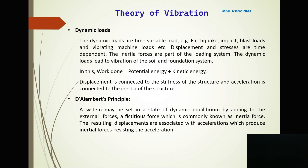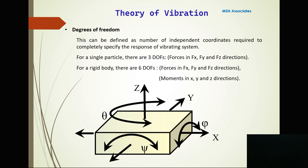The resulting displacements are associated with accelerations which produce inertial forces resisting the acceleration. We must also have the concept of degrees of freedom. For a single particle there are three degrees of freedom; for a rigid body there are six degrees of freedom. Three degrees of freedom refers to forces in the x, y, and z directions. Six degrees of freedom means three components of force in x, y, z and three components of moment in x, y, and z directions.